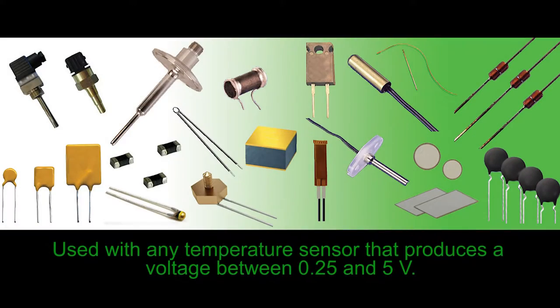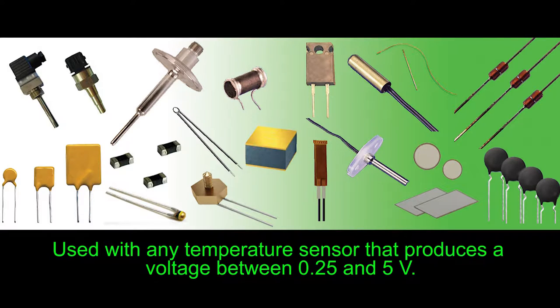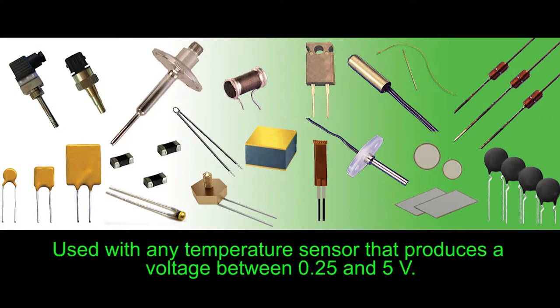These precision temperature controllers can be used with any temperature sensor that produces a voltage between 0.25 and 5 volts. The most common are thermistors, RTDs and IC sensors such as the LM335 or AD590.